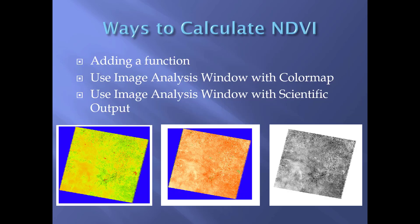The ways you can calculate NDVI include adding a function, using the image analysis window in ArcMap with color map, or using the image analysis window with scientific output. Here are the three resultant images from those different methods.